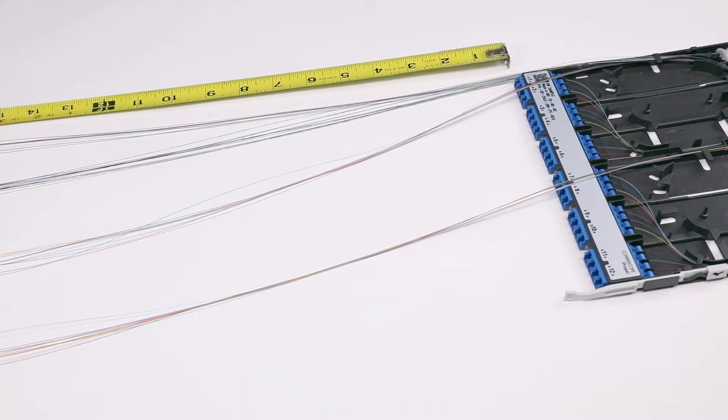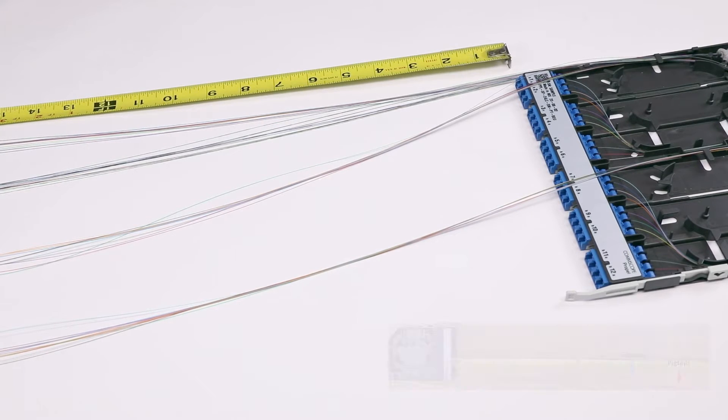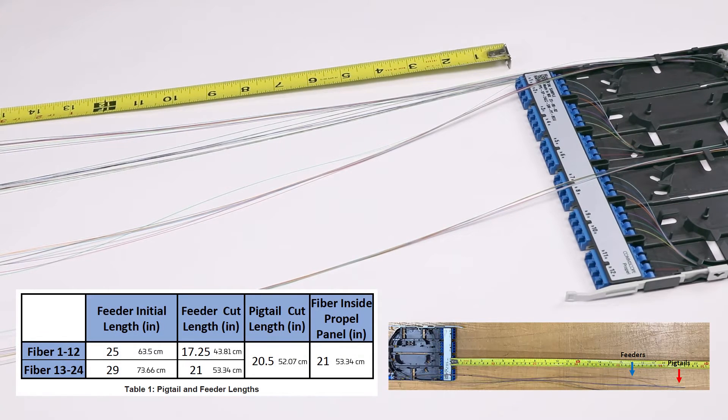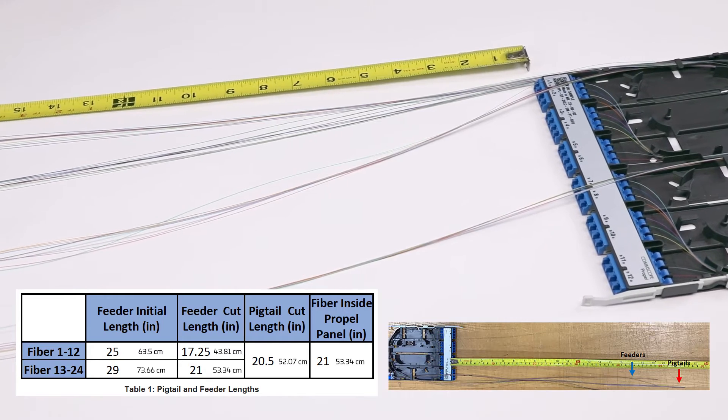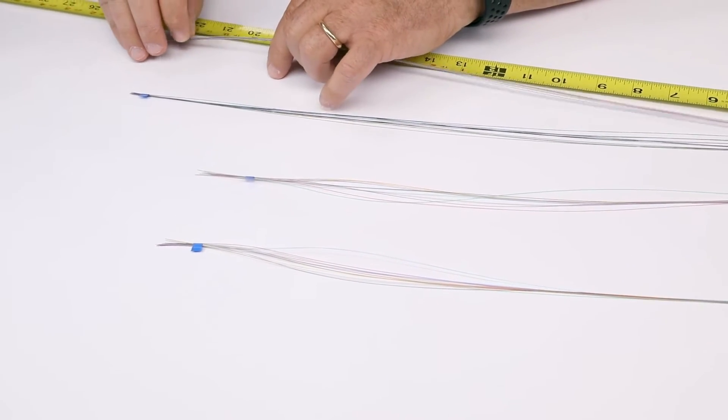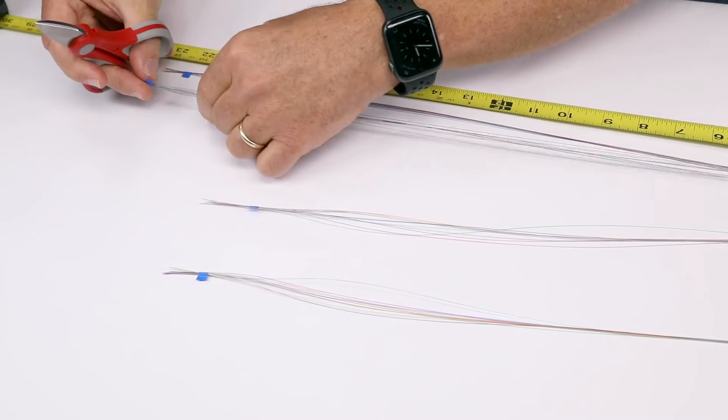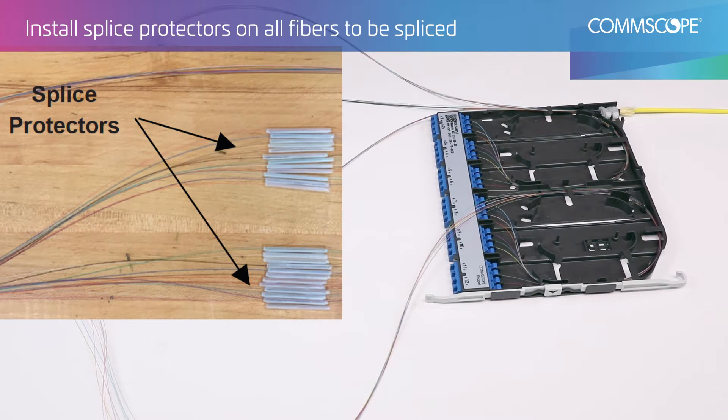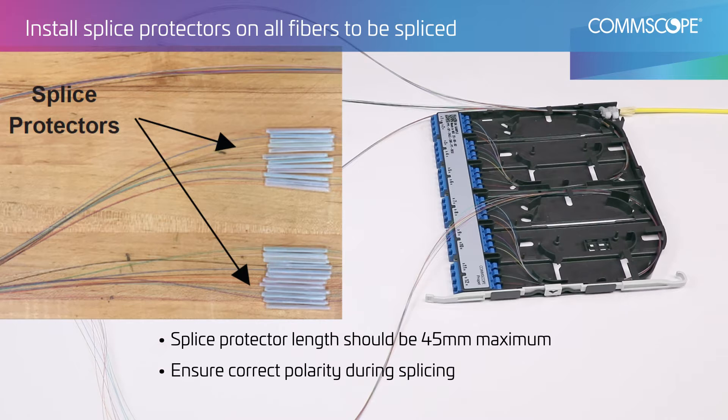Measure and trim pigtail and feeder to specified cut length per table 1. Using the provided splice protectors, strip, clean, cleave, and splice fibers following standard splicing methods.